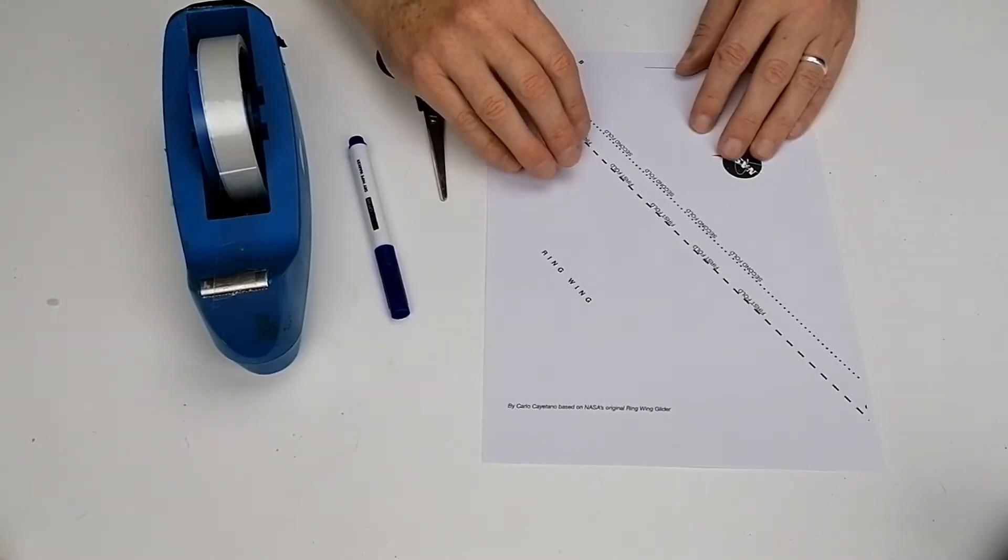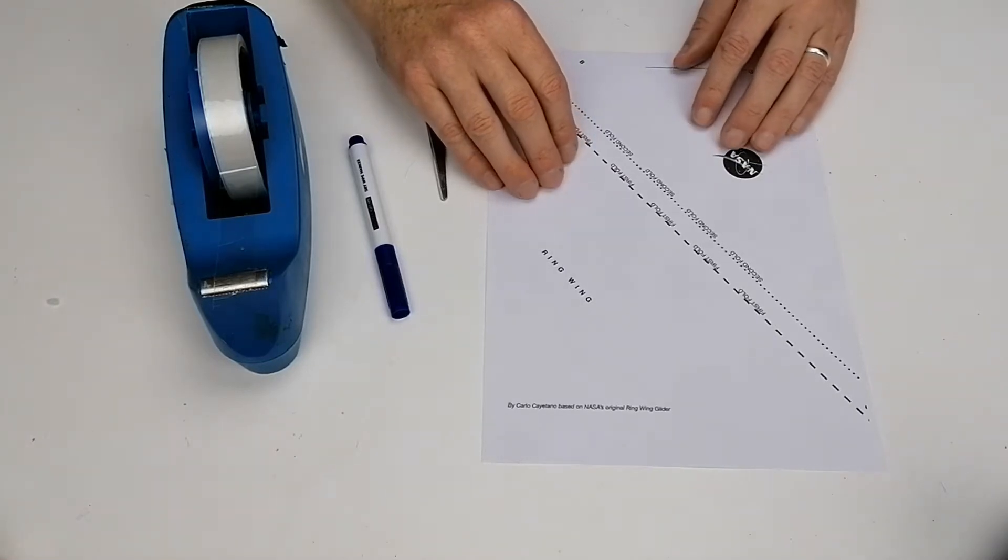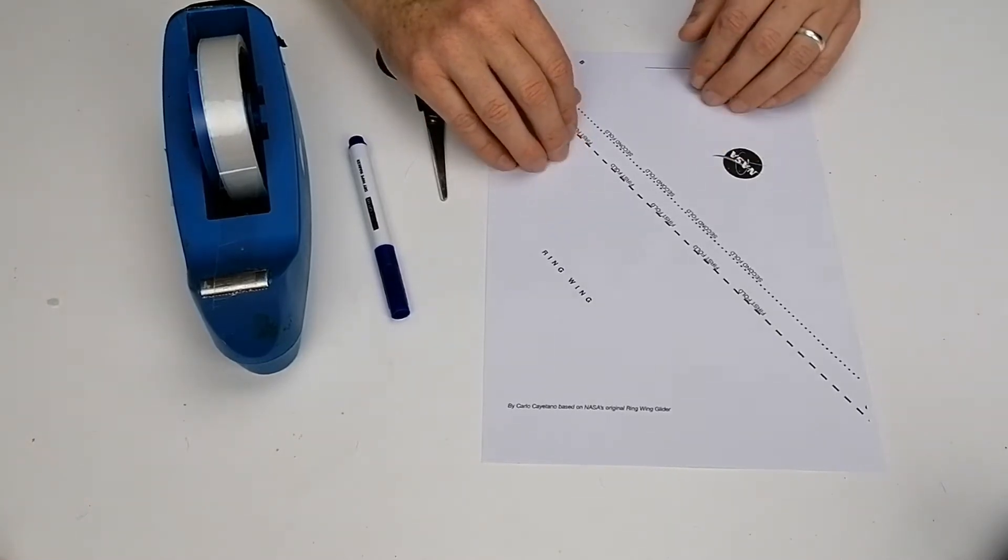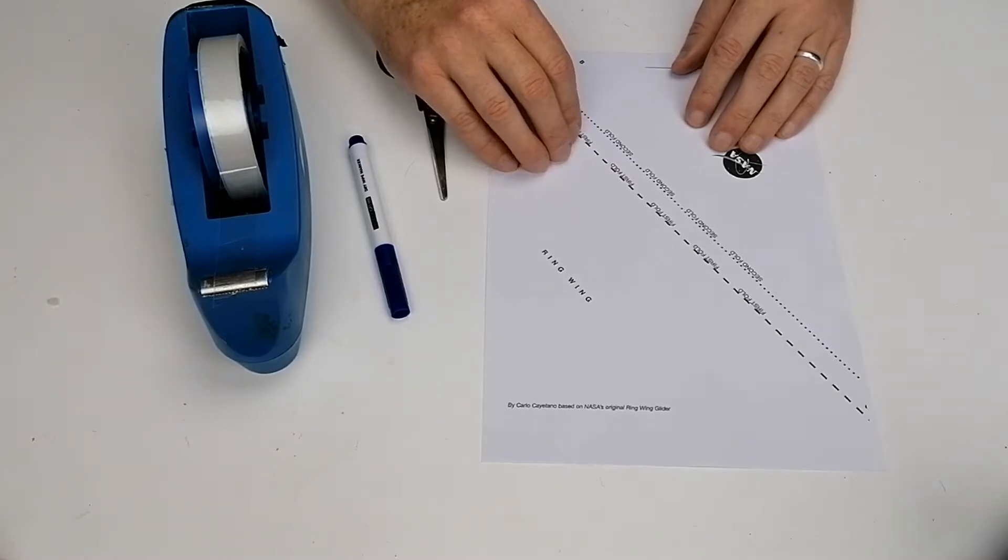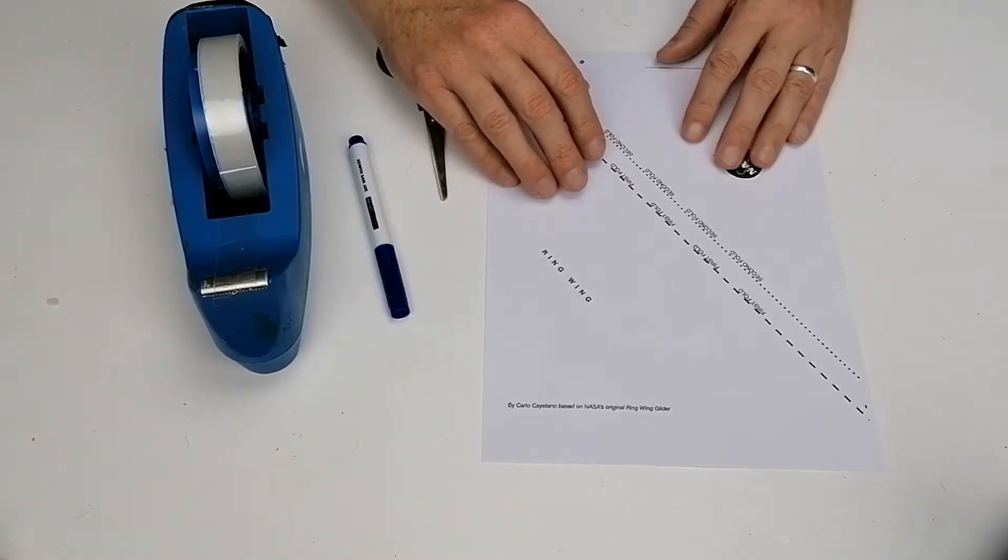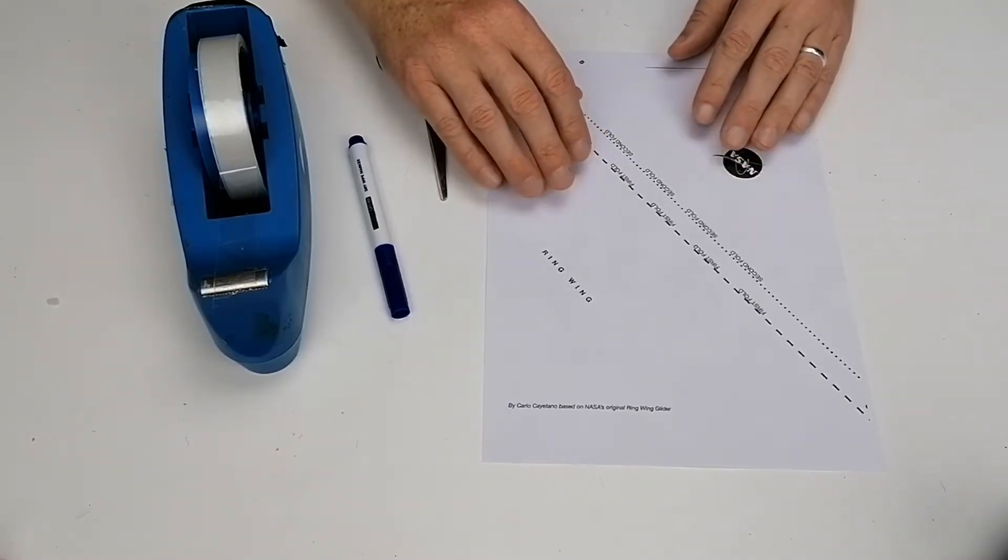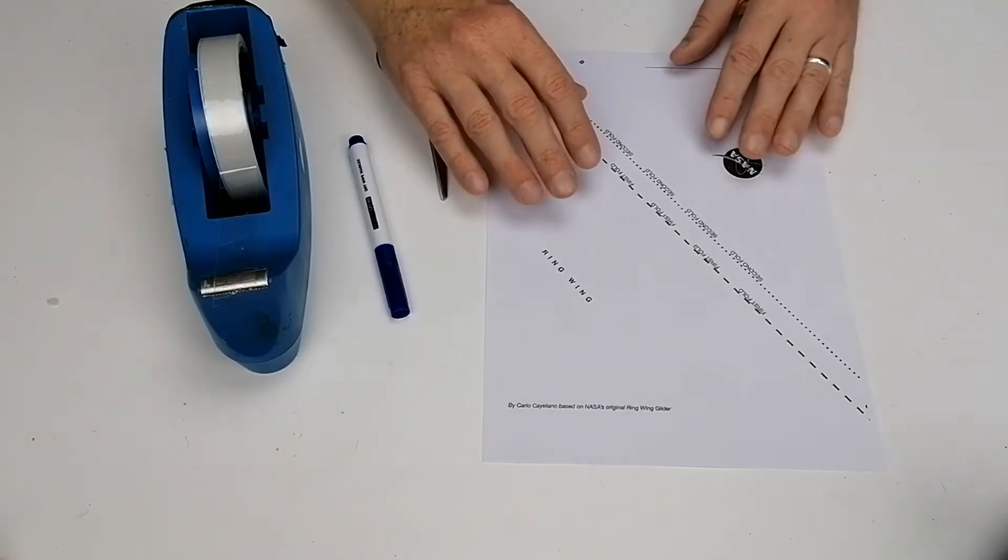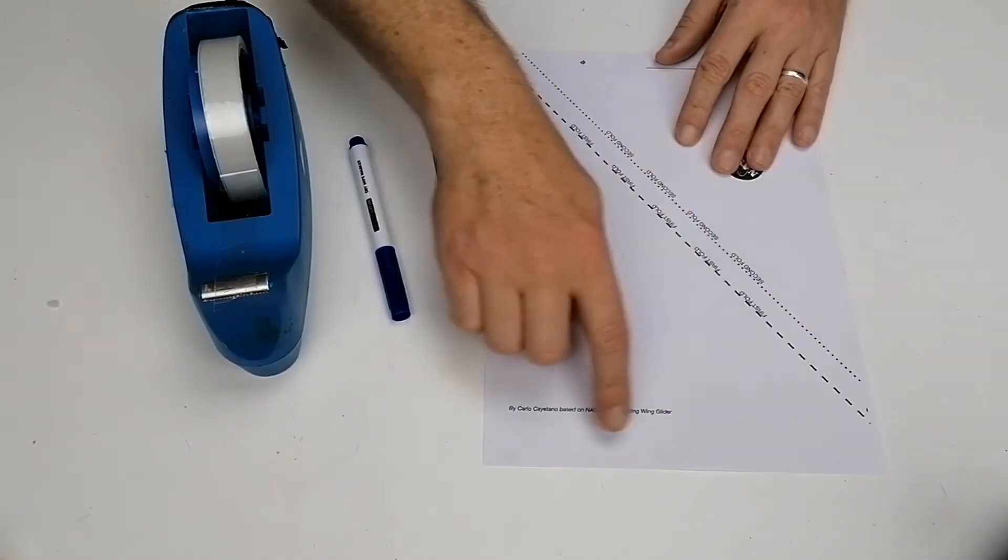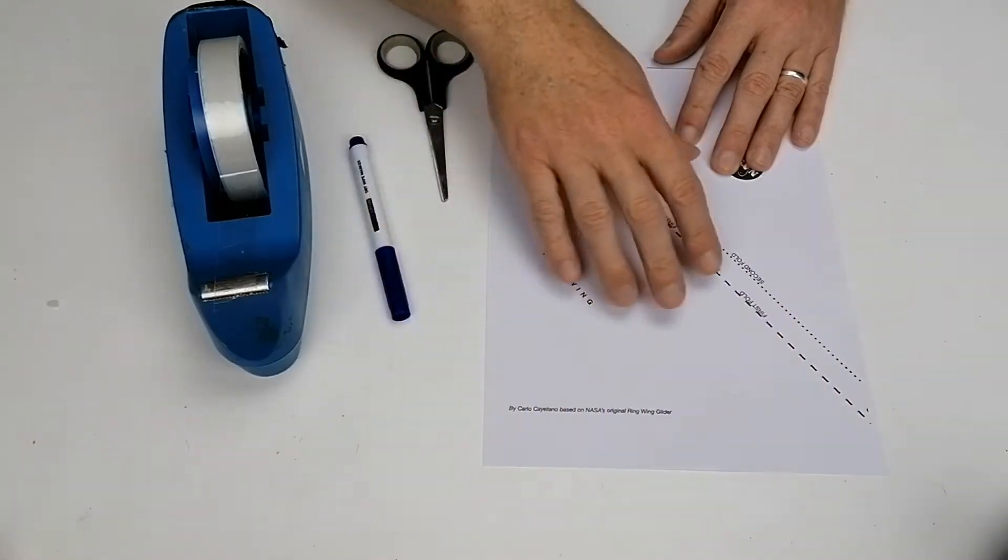I've left a link to that print-off in the description of the video. Now, the ring wing template, because it comes from NASA, is based in American format of paper, and American format paper is called letter.